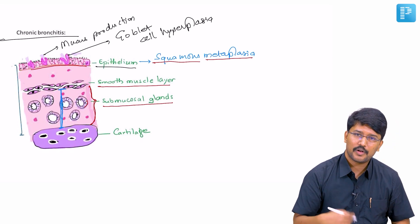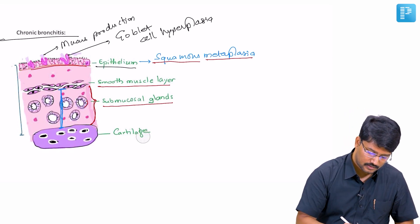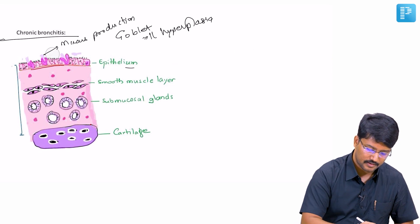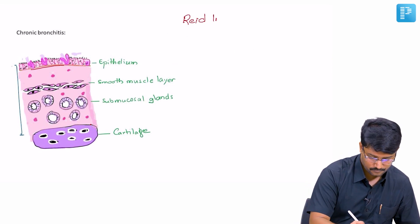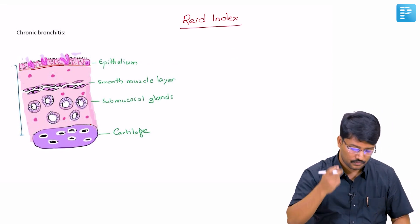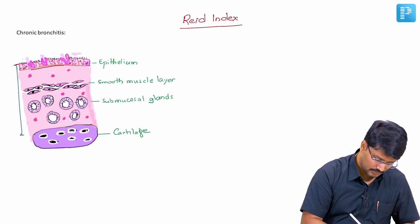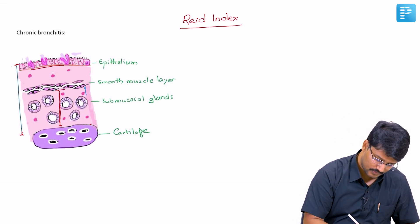And this we can quantitatively measure by calculating something known as Reid index. Reid index is the ratio of the distance between the airway epithelium and the cartilage and the distance occupied by the submucosal glands, this one, this portion.